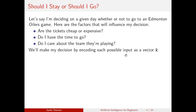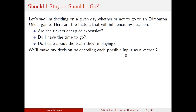We're going to encode each possible input as a vector x. The ticket prices can be cheap, in which case I encode the first input as a one, or expensive, in which case I encode it as a zero — just a binary zero or one. My availability is the second entry: if I'm available, I put a one; if not, a zero. And my interest level: if I'm interested, I put a one; if not, a zero.